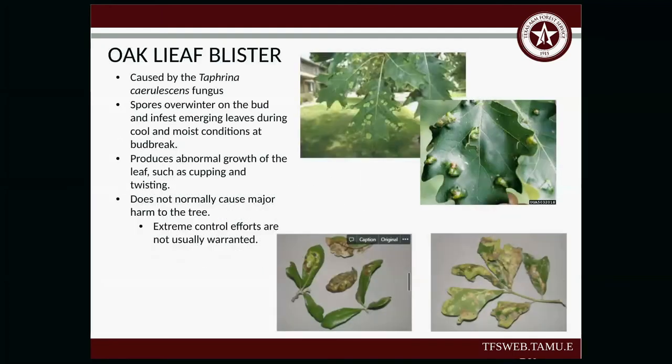Oak leaf blister is not going to hurt your tree. It's caused by the Taphrina caerulescens fungus. The spores overwinter on the buds, and when the leaves start emerging, that's when the fungus gets onto the leaf — the fungus isn't actually in the tree, just on the leaf. To take care of it: next year when the tree drops the leaves, rake up all those leaves and destroy them. That will help put a break in the cycle.